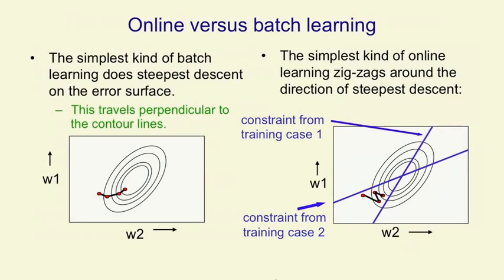If we then consider the other training case, we'll move perpendicularly towards the other line. And if we alternate between the two training cases, we'll zigzag backwards and forwards, moving towards the solution point, which is where those two lines intersect. That's the set of weights that is correct for both training cases.